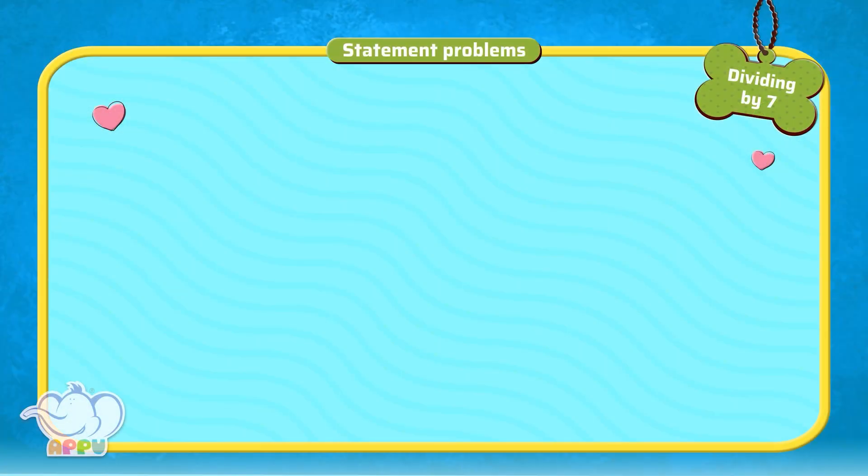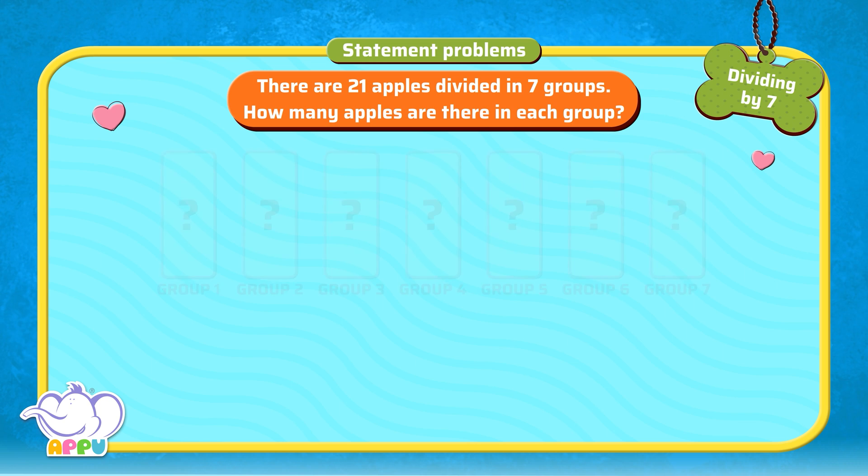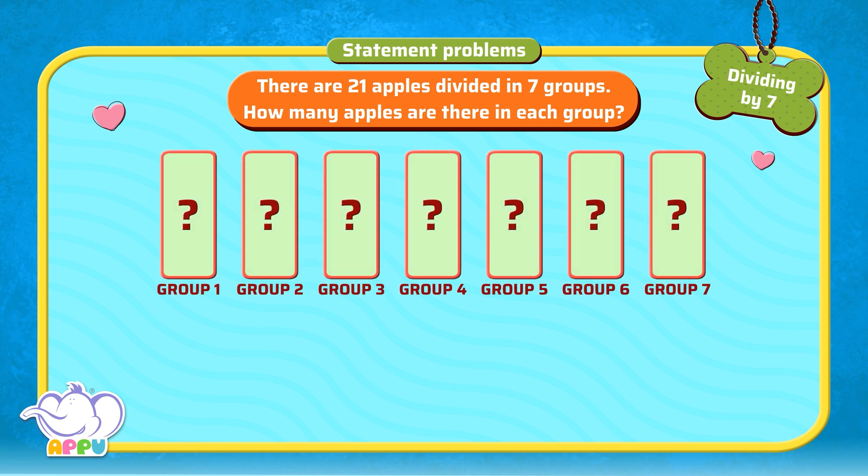Statement problems. There are 21 apples divided in 7 groups. How many apples are there in each group?